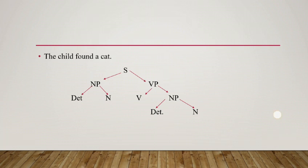Another sentence is 'the child found a kid.' In this sentence there are two parts: noun phrase and verb phrase. Noun phrase is divided into two parts: determiner and noun. Verb phrase is divided into two parts: verb and noun phrase. And noun phrase is further divided into two parts: determiner and noun.